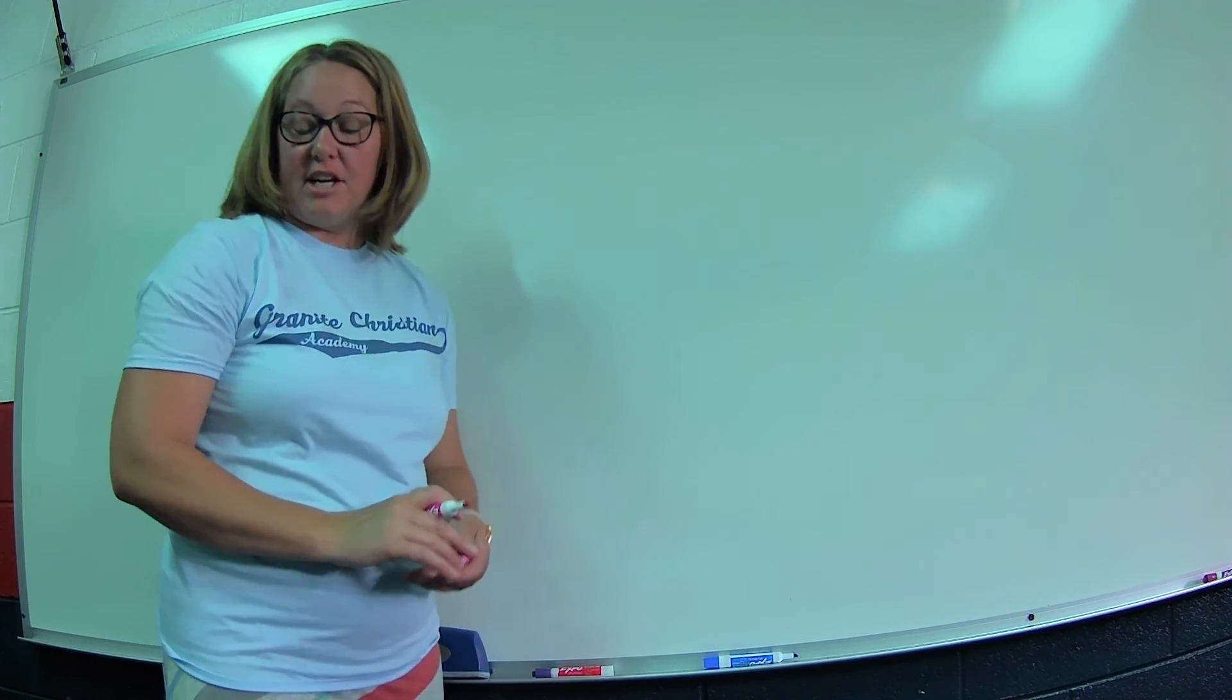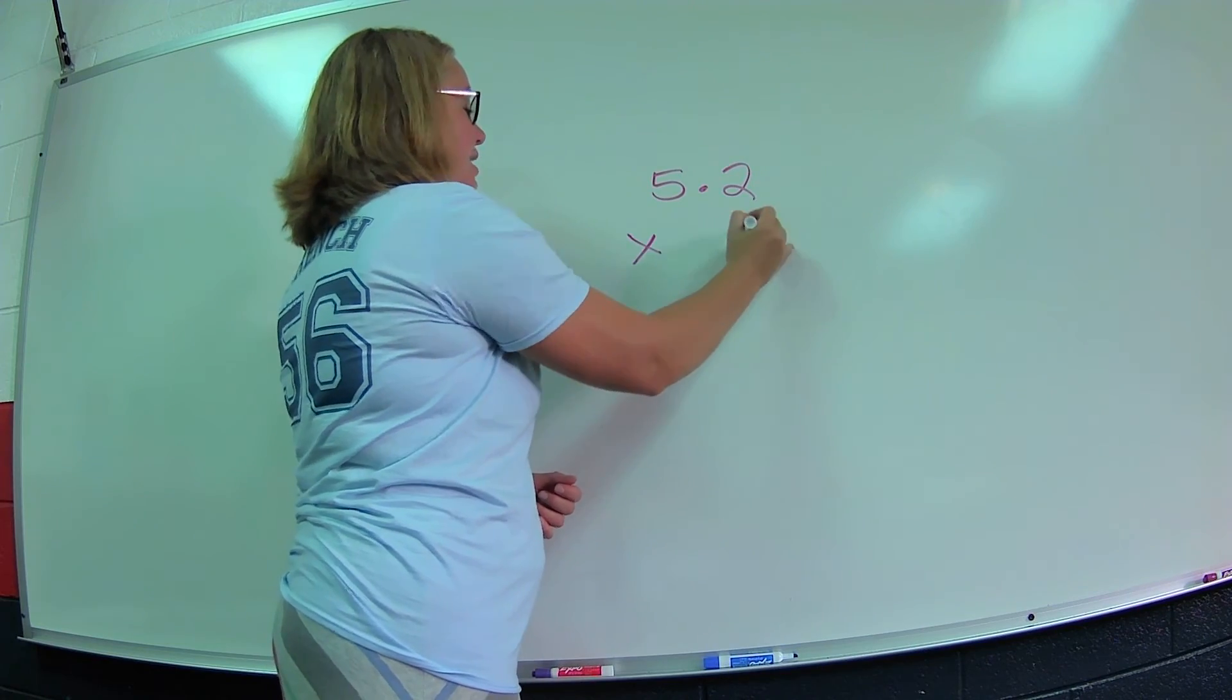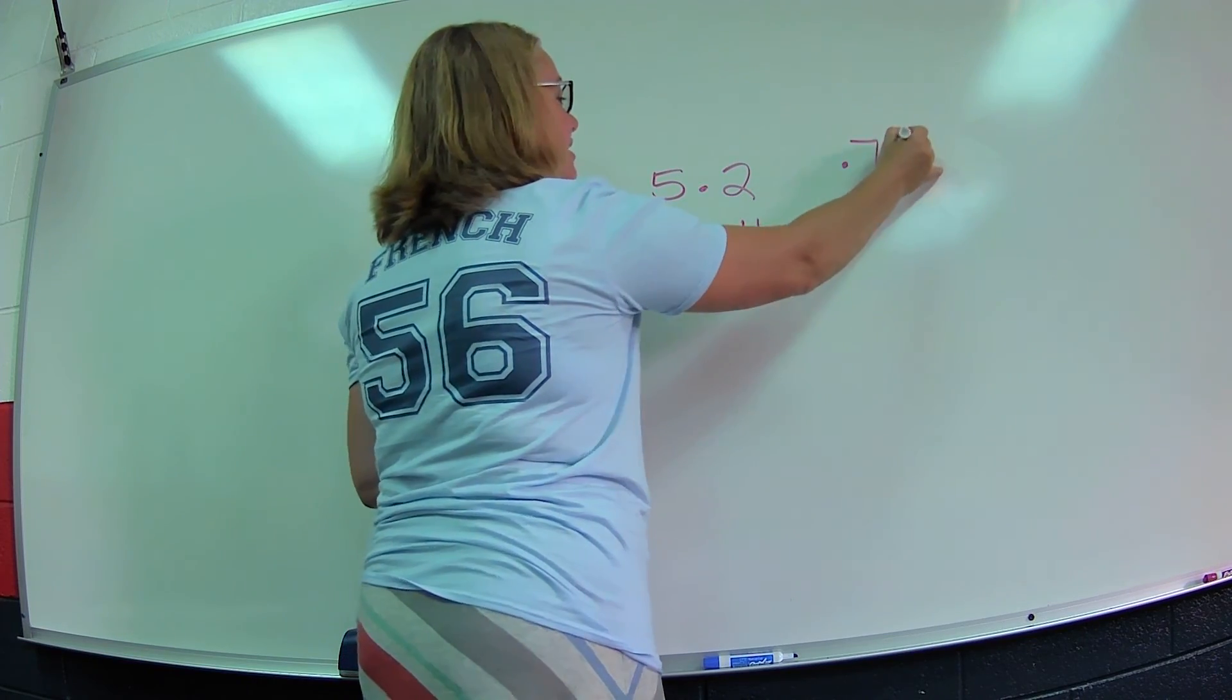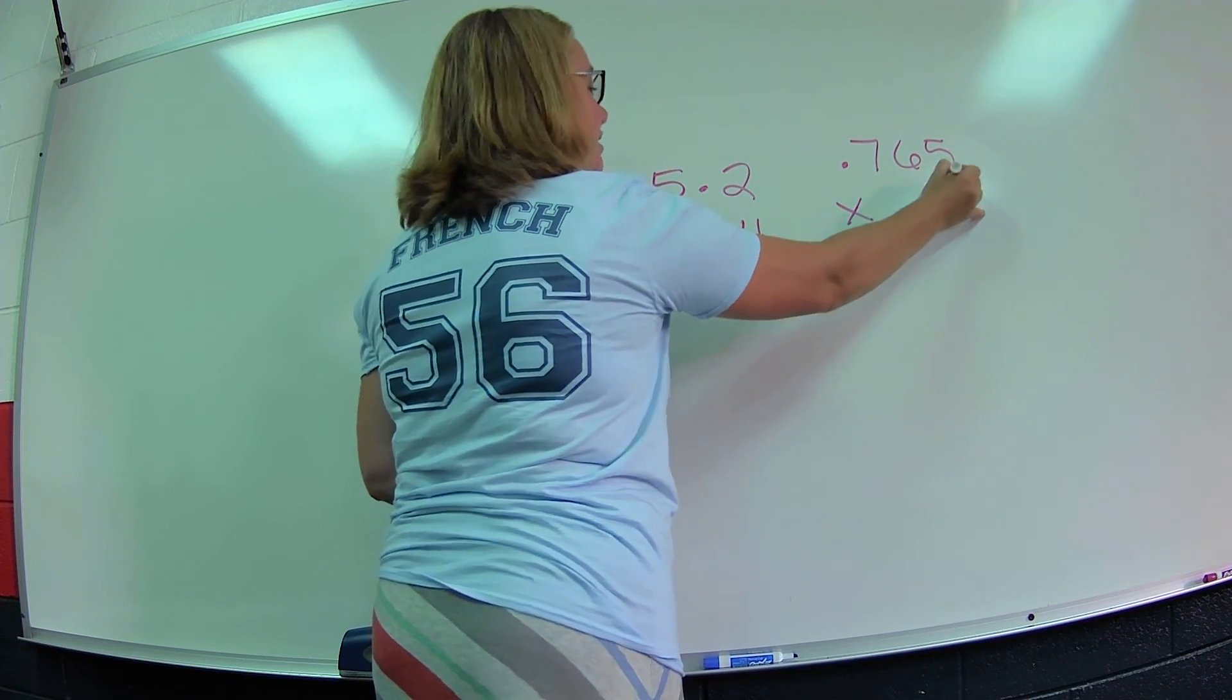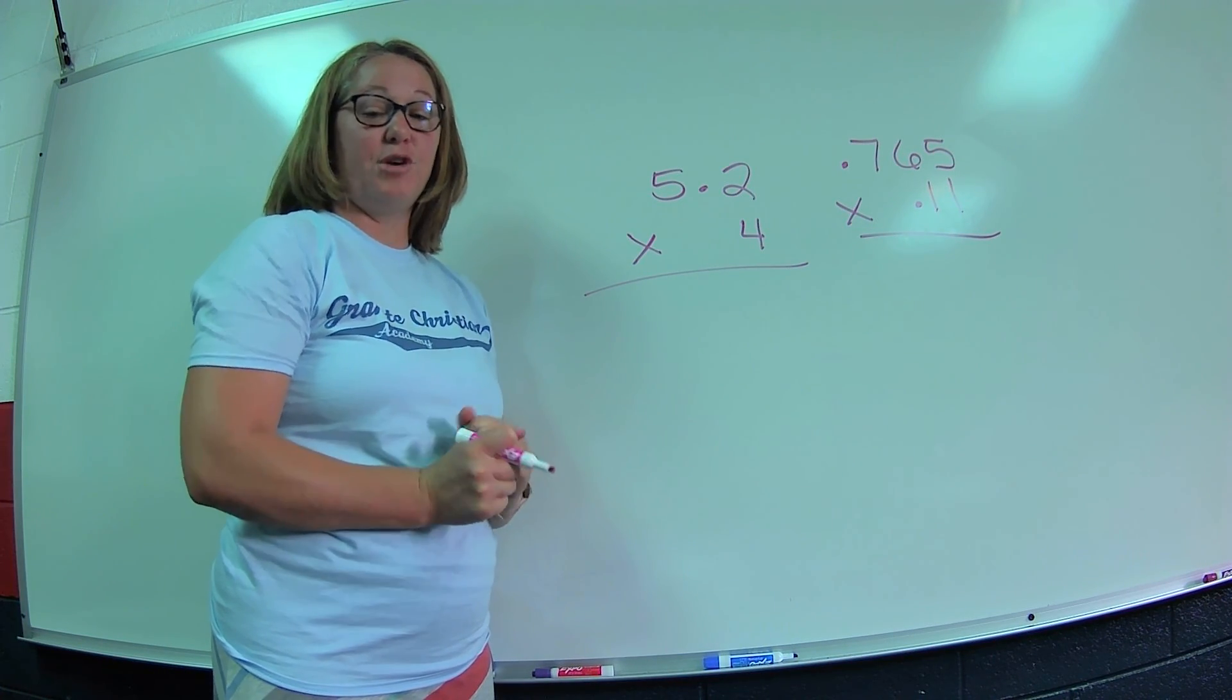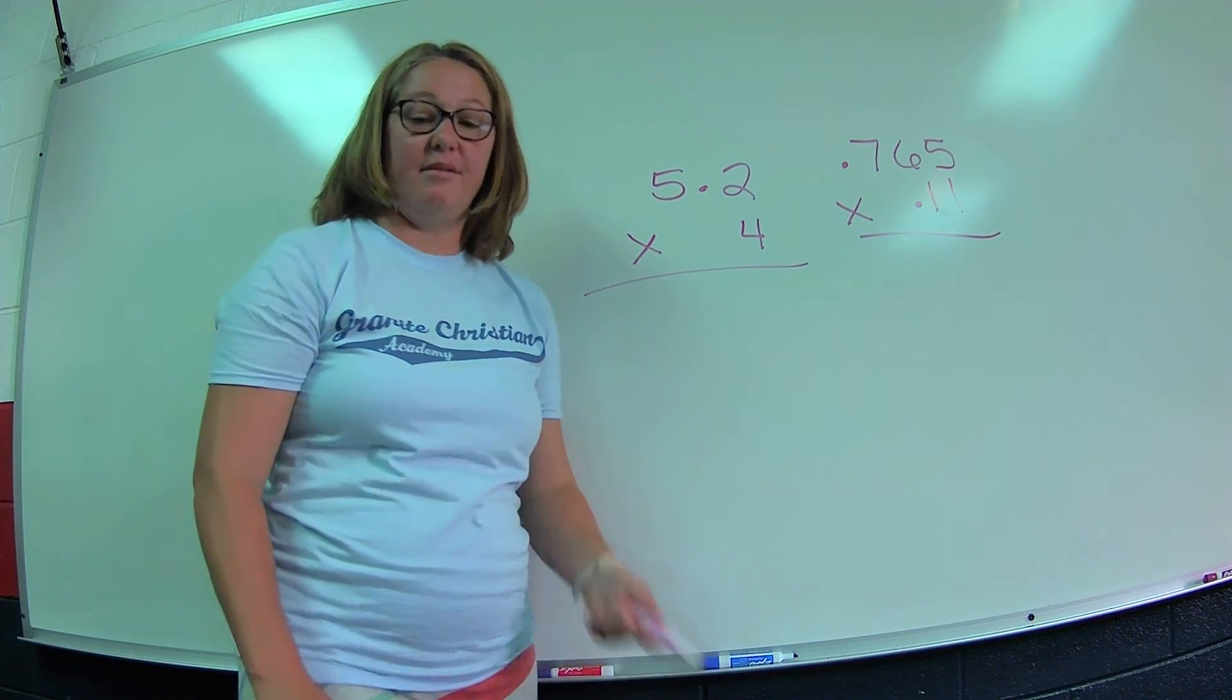I'm going to leave two problems with you for you to practice, and we'll check them next time. I'm going to give you 5.2 times 4, then I'm going to give you 5.765 times 0.11. Make sure you count your decimal places and make sure you add your decimal to your product. Again, thank you for watching, and I'll see you soon. Bye bye.